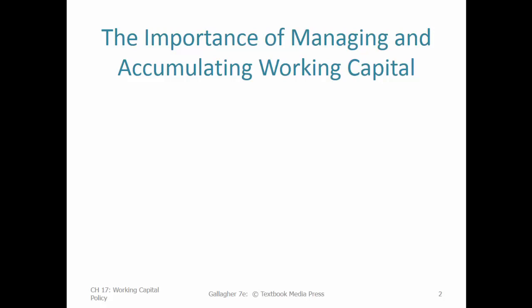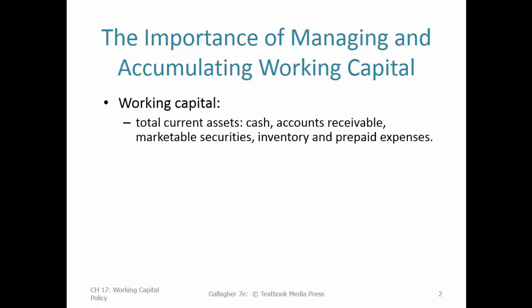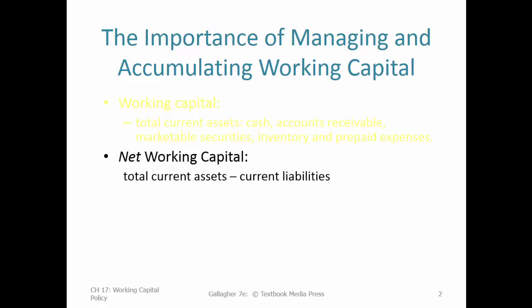Working capital is the total current assets of the organization. Current refers to the liquidity level — assets that are either liquid right now like cash, or realizable within the next year: things that will turn into cash soon, such as accounts receivable, marketable securities, inventory, and prepaid expenses. Net working capital is total current assets minus current liabilities — assuming we had to pay off all liabilities today, how much current assets would we actually have remaining?